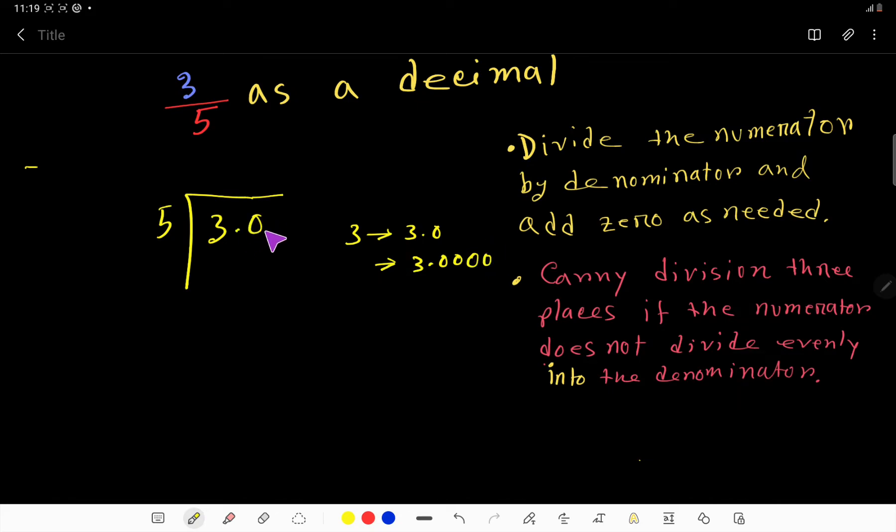I have taken one decimal place. Let's see: 5 goes into 3 how many times? 0 times. 0 times 5 gives us 0. If you subtract, you get 3. The decimal point goes to the top, to the quotient side. Now bring down the 0.